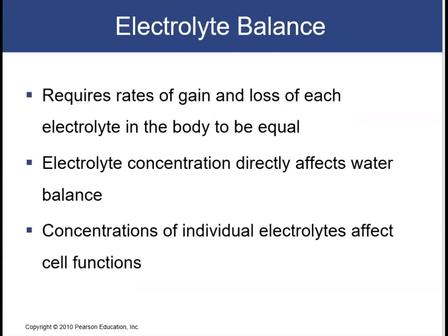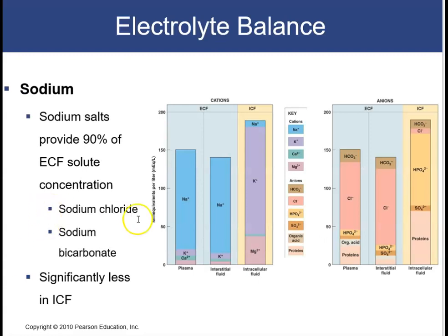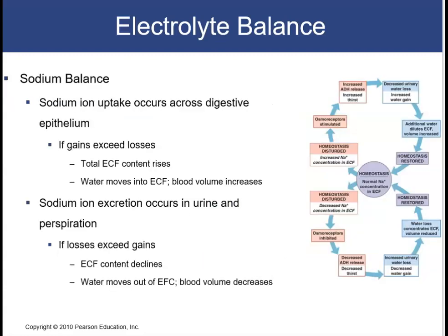Now we're going to shift into electrolyte balance. This balance requires the rates of gain and loss of each electrolyte in the body to be equal. As we've seen with water, electrolyte concentration directly affects water balance, so the two go hand in hand. The concentration of individual electrolytes affects cell functions — abnormal amounts of sodium will affect your neurons, and abnormal amounts of either calcium or potassium could have adverse effects on your cardiac muscle. The first electrolyte to look at is sodium — it provides 90% of the solute concentration of our ECF.